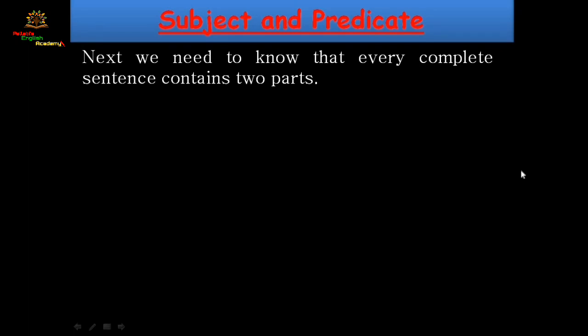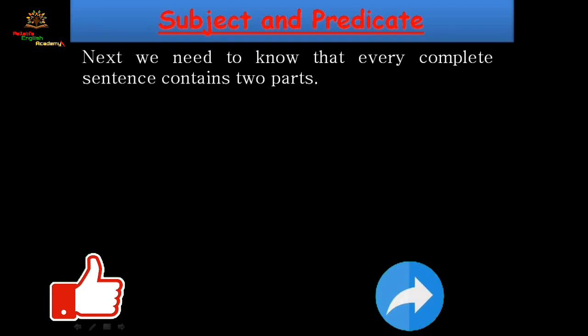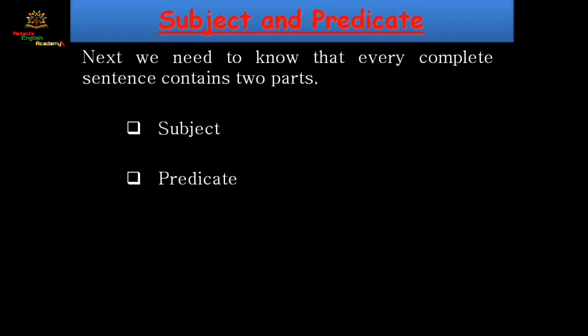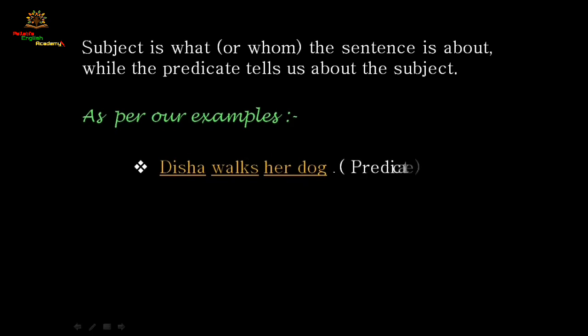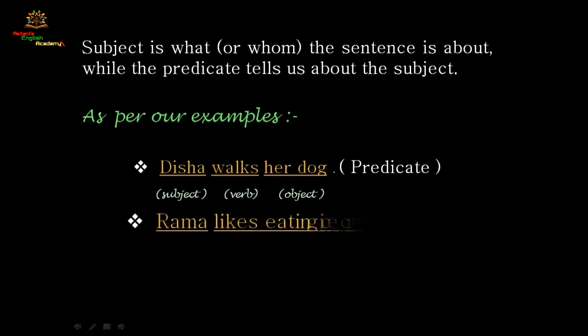Every complete sentence contains two parts. The first is the subject and the second is the predicate. The subject is what or whom the sentence is about. The subject is the noun that is doing or being something — in simple terms, what the sentence is about or who it is about.